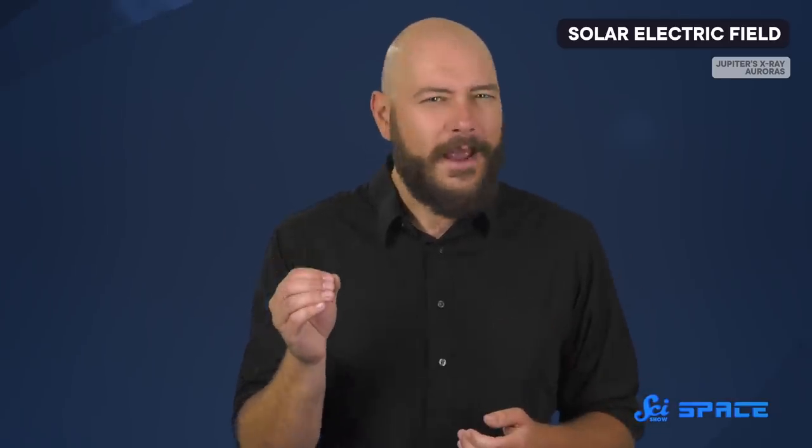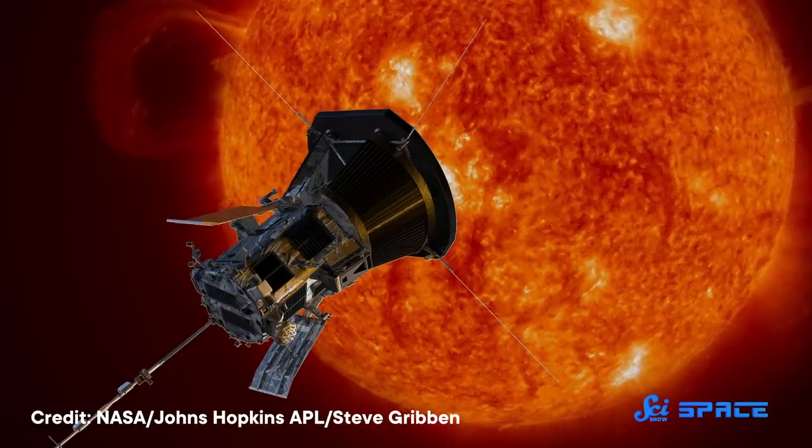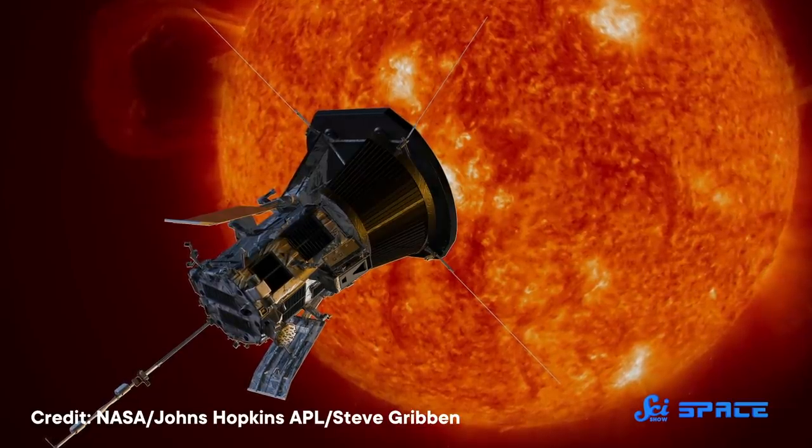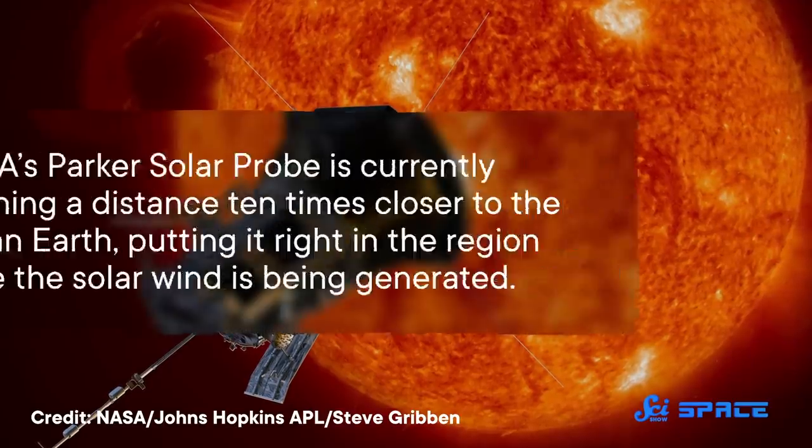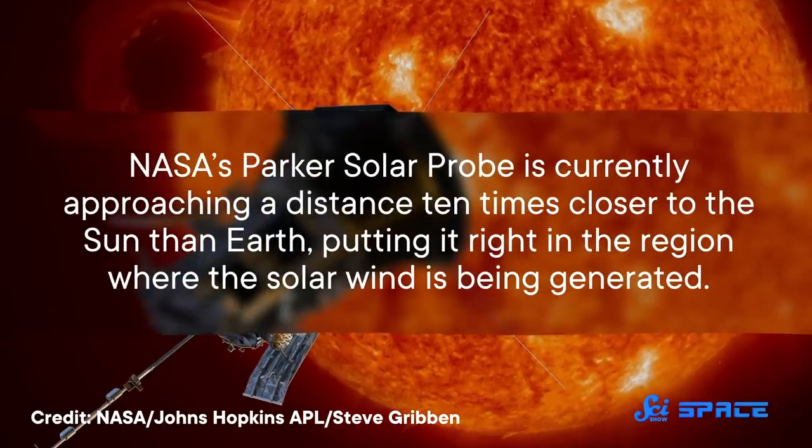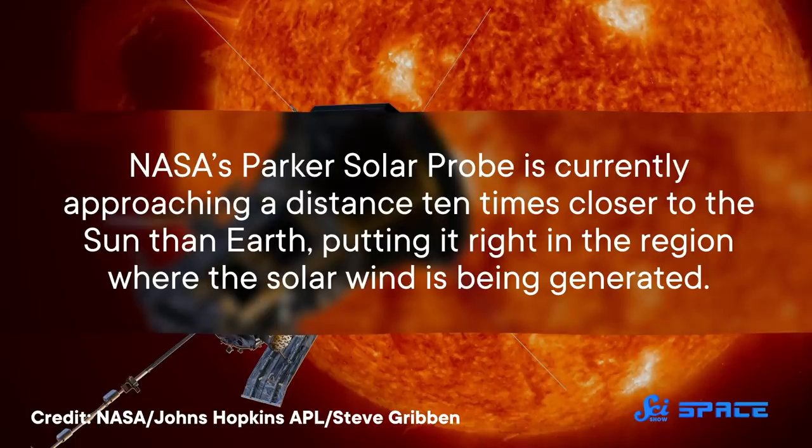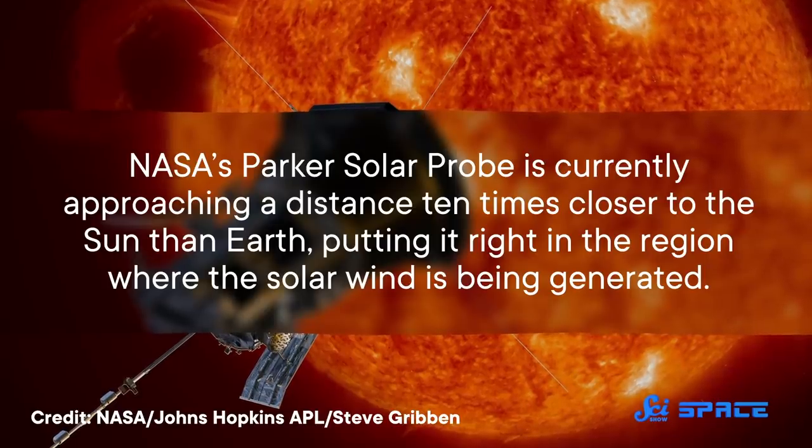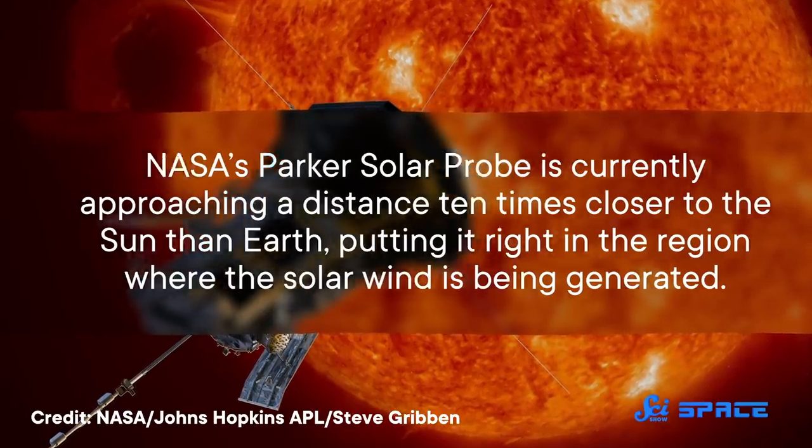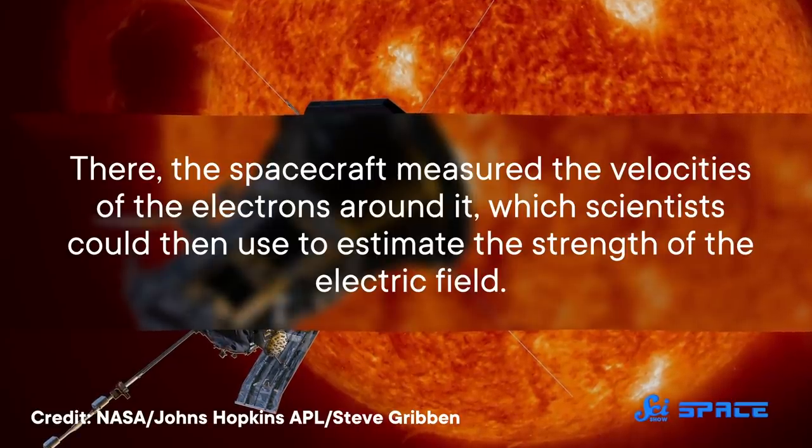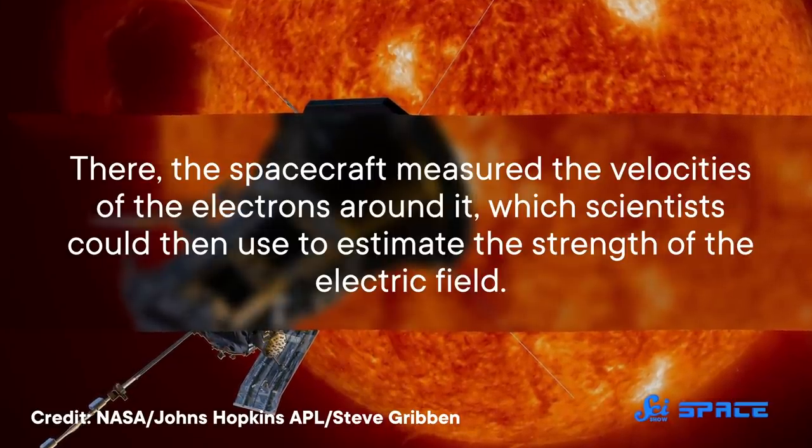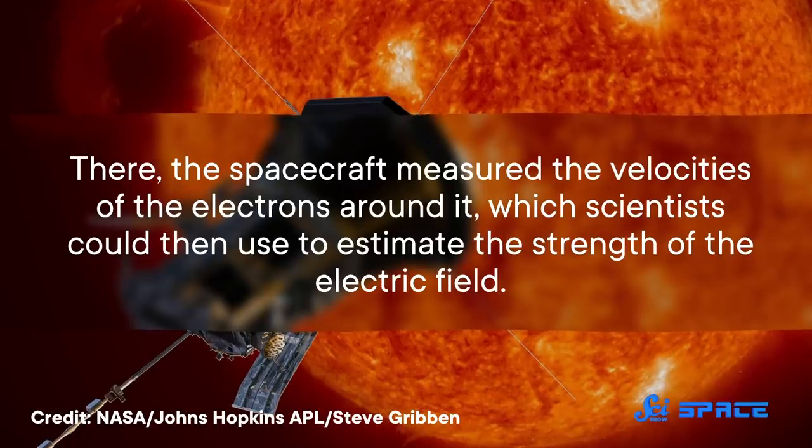So, to measure the field's impact at all, you've got to be right in it. Fortunately, for the first time, we've got a spacecraft close enough to make those observations. NASA's Parker Solar Probe. Parker is currently approaching a distance ten times closer to the Sun than Earth, putting it right in the region where the solar wind is being generated. There, the spacecraft measured the velocities of the electrons around it, which scientists could then use to estimate the strength of the electric field.